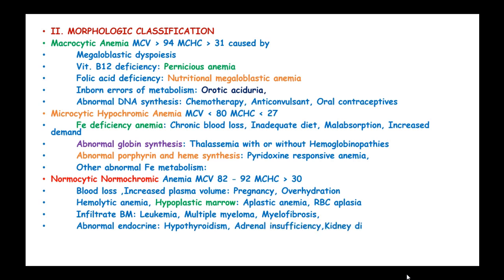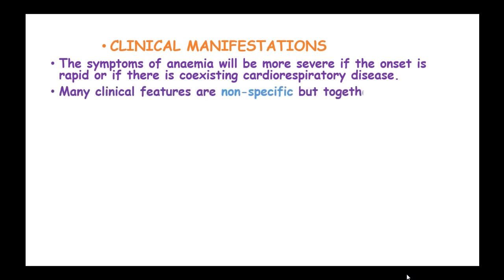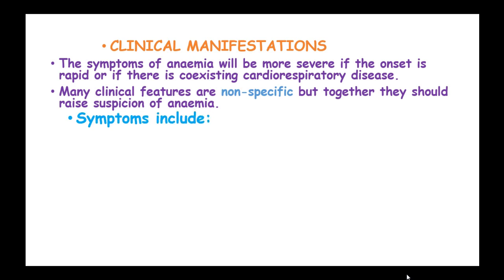Abnormal endocrine factors can cause adrenal insufficiency, as seen in kidney disease, liver disease, and liver cirrhosis. The clinical manifestations or symptoms of anemia would be more severe if the onset is rapid or if there is coexisting cardiorespiratory disease. Many clinical features are nonspecific, but together they should raise the suspicion of anemia.